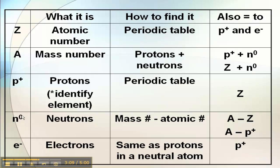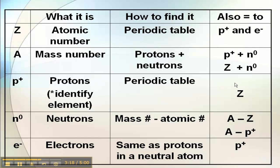Here's neutrons N with the superscript zero. If we rearrange these equations up here, then we get A minus Z, or A minus P, for our number of neutrons.